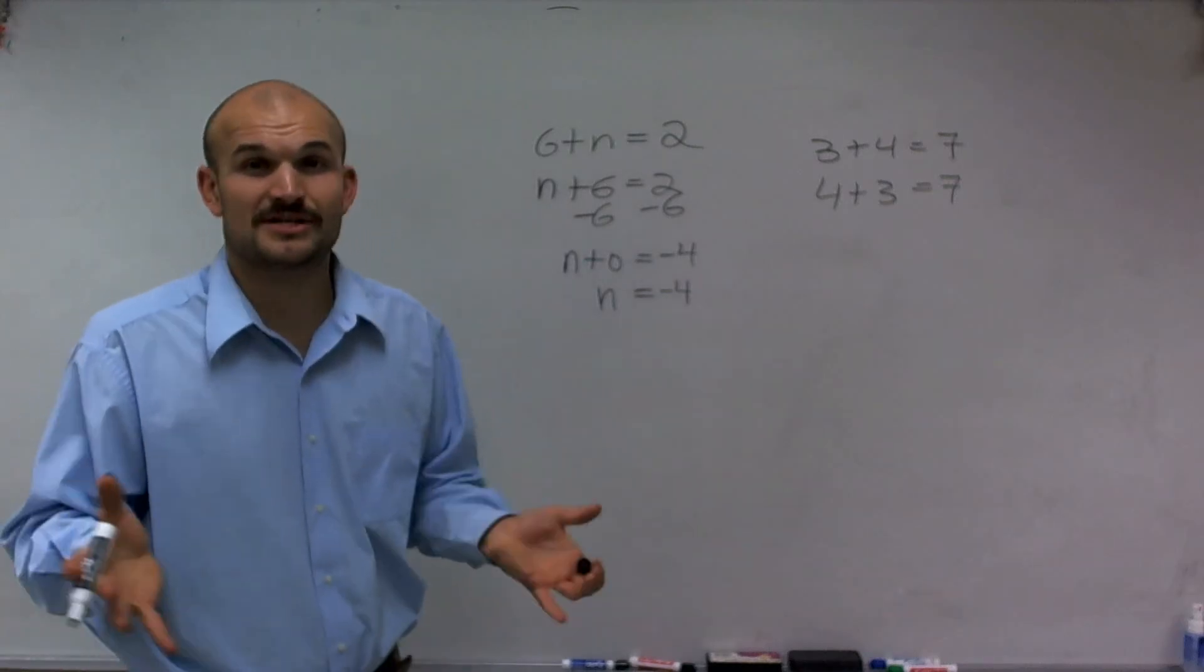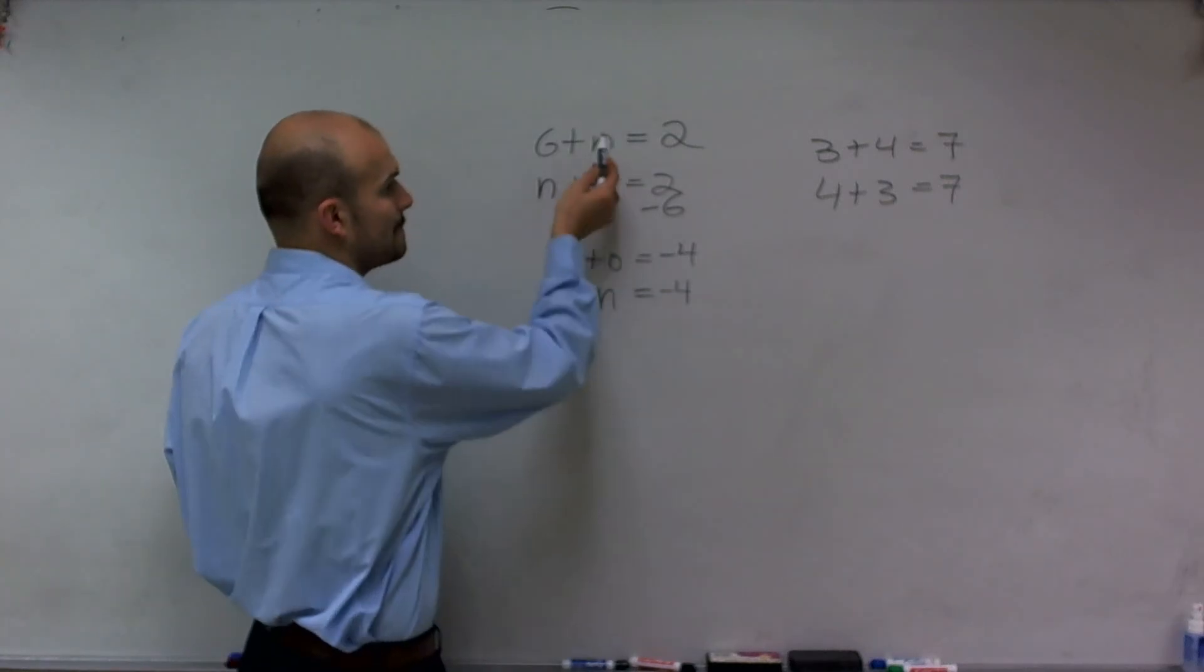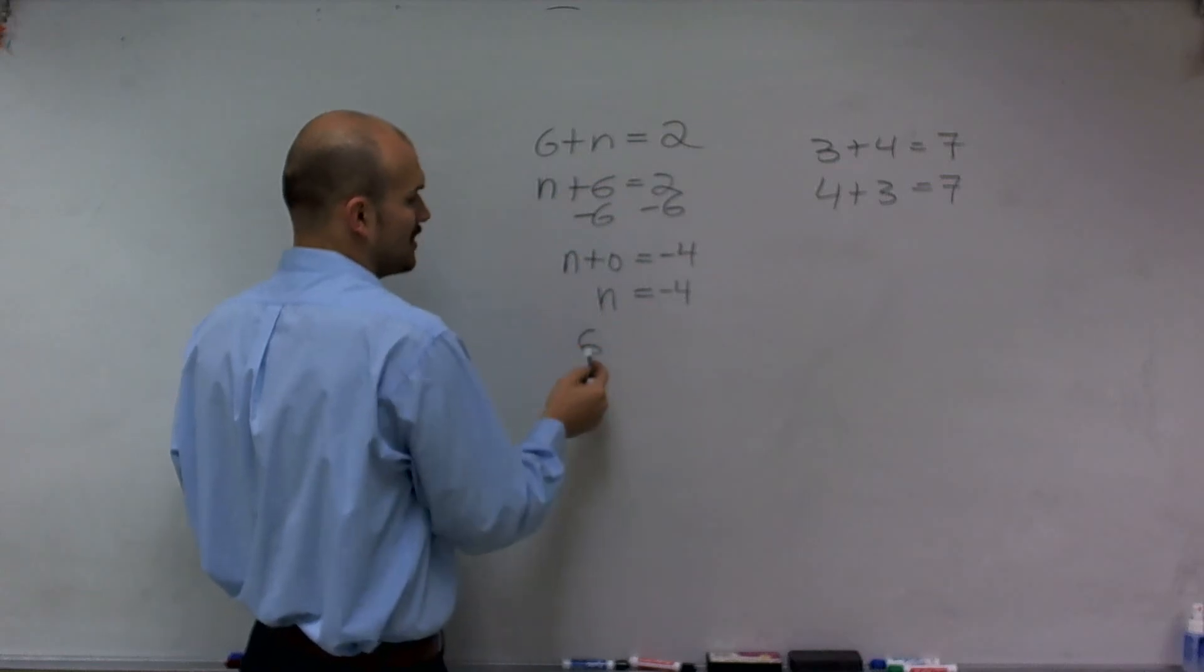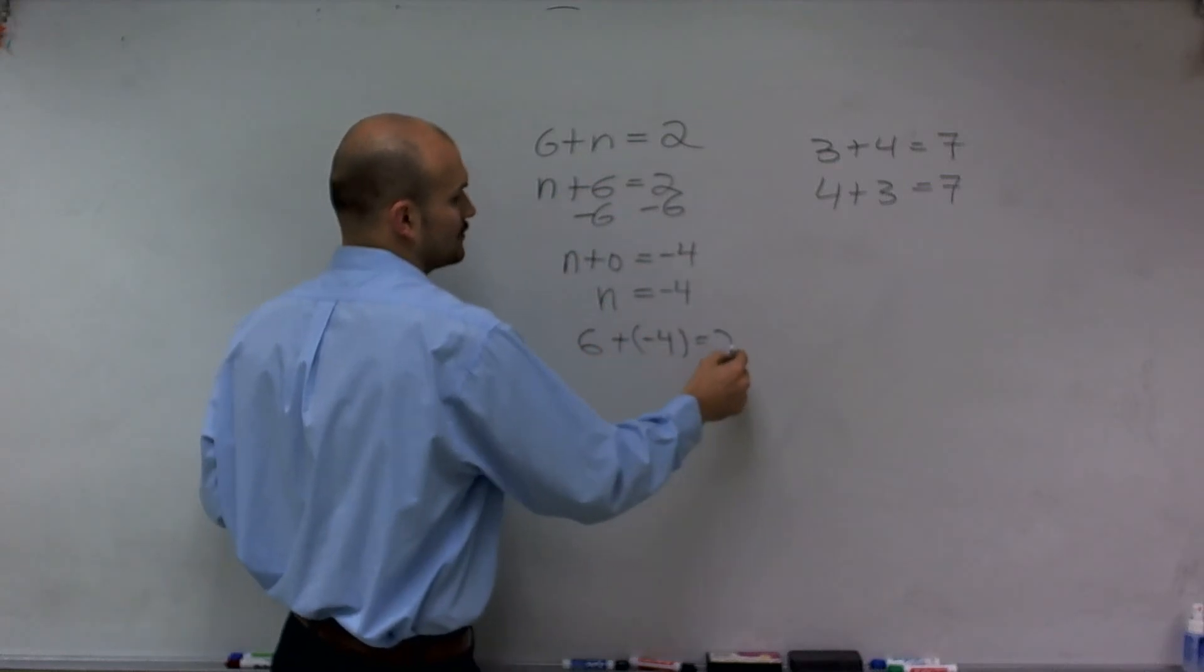Now just to double check to make sure my answer is correct, I can always plug in the value of n back into the original equation. So I have 6 plus negative 4 equals 2.